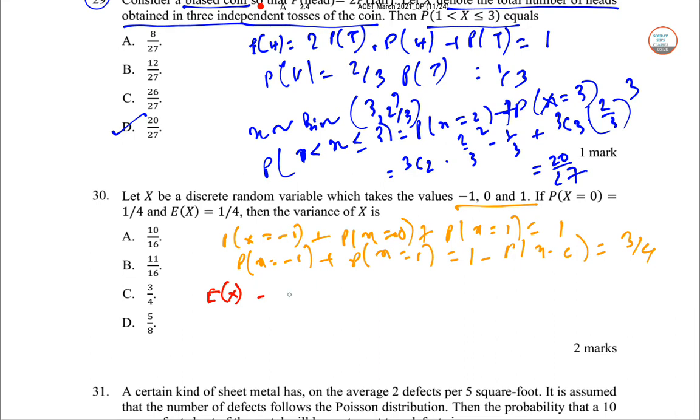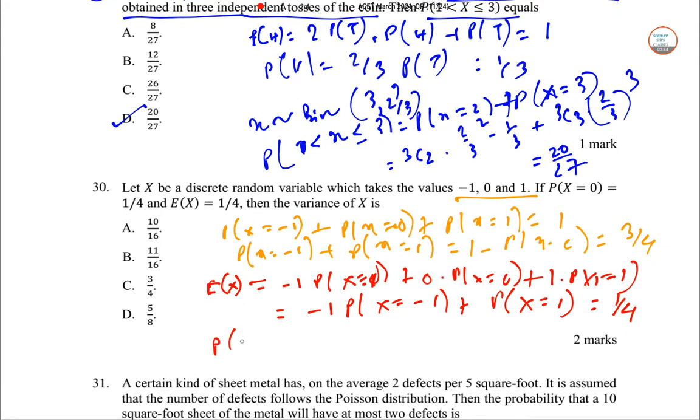E(X) = -1·P(X=-1) + 0·P(X=0) + 1·P(X=1) = 1/4. This gives us -P(X=-1) + P(X=1) = 1/4. Solving this with the earlier equation, we get P(X=1) = 1/2 and P(X=-1) = 1/4.